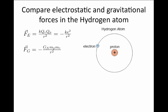The gravitational force is also related to the separation between the electron and the proton, but it is equal to minus G, which is Newton's gravitational constant, times the proton mass times the electron mass, divided by the distance between them squared.